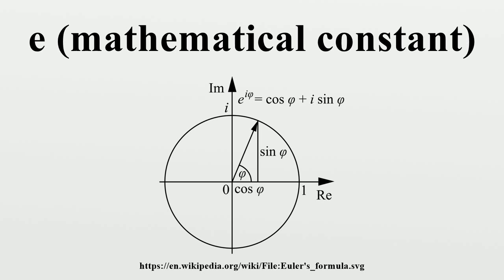The limit on the far right is independent of the variable x. It depends only on the base a. When the base is e, this limit is equal to 1, and so e is symbolically defined by the equation.